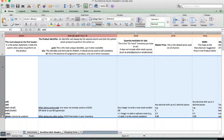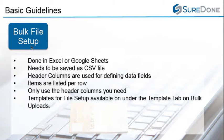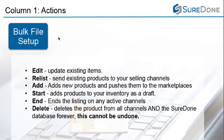There are two columns that always have to be present: the action column and the field ID. The action column has to be the first column in every bulk file — this tells the system how to process the information you are providing. The actions are as follows: Edit for making changes to products that already exist in SureDone, and Relist for sending current products to new channels, such as listing a product you already have on Amazon onto eBay.